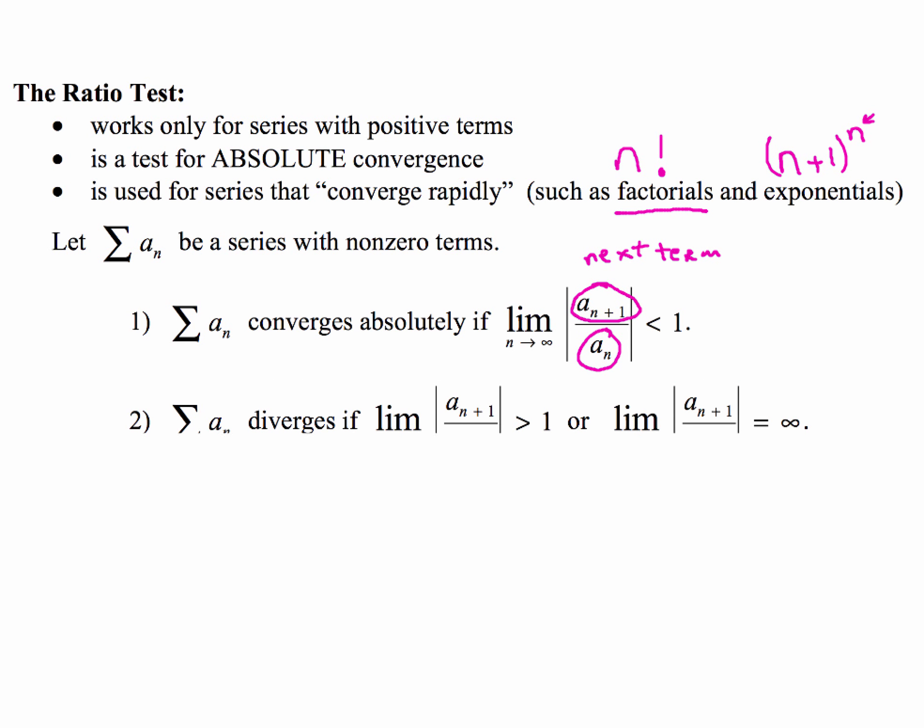Now the second thing that we want to take a look at is if when we do this limit process, if we get either a value that's greater than 1, or if we get something that's infinity, then that means that the series is going to diverge. However,